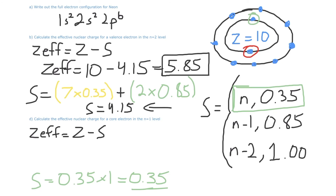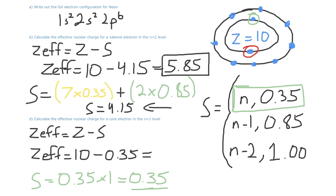It's important to note this trend: for electrons that are higher in energy, there are typically more energy levels and electrons present between them and the nucleus, so their S value will be much higher for valence electrons compared to core electrons, because valence electrons have many more electrons in between them contributing shielding. So the effective nuclear charge Z_effective for the core electron in the n equals 1 level is equal to 10 minus 0.35, which equals 9.65 — our final effective nuclear charge for this core electron in neon.